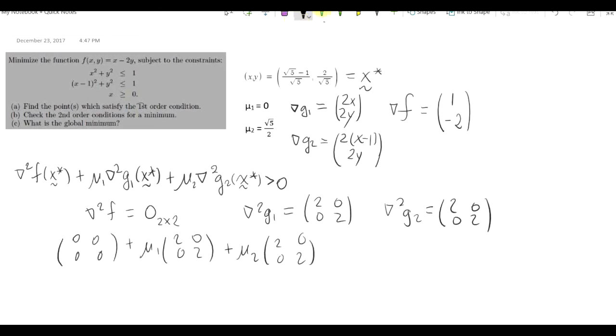Keep in mind that the first Lagrange multiplier, mu1, must be 0, because we need to satisfy the complementary slackness condition for g1. And mu2 is the second Lagrange multiplier, which we found to be equal to root 5 over 2 from before.